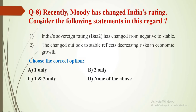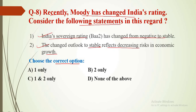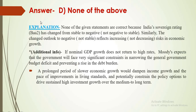Question number 8: Moody's has recently changed India's rating. Consider the following statements. Statement 1: India's sovereign rating has changed from negative to stable. Statement 2: The change in outlook to stable reflects decreasing risk in economic growth. Both statements are incorrect, so the answer is D — none of the above. India's sovereign rating has actually changed from stable to negative, not negative to stable. Similarly, the change in outlook to negative reflects increasing risk in economic growth.